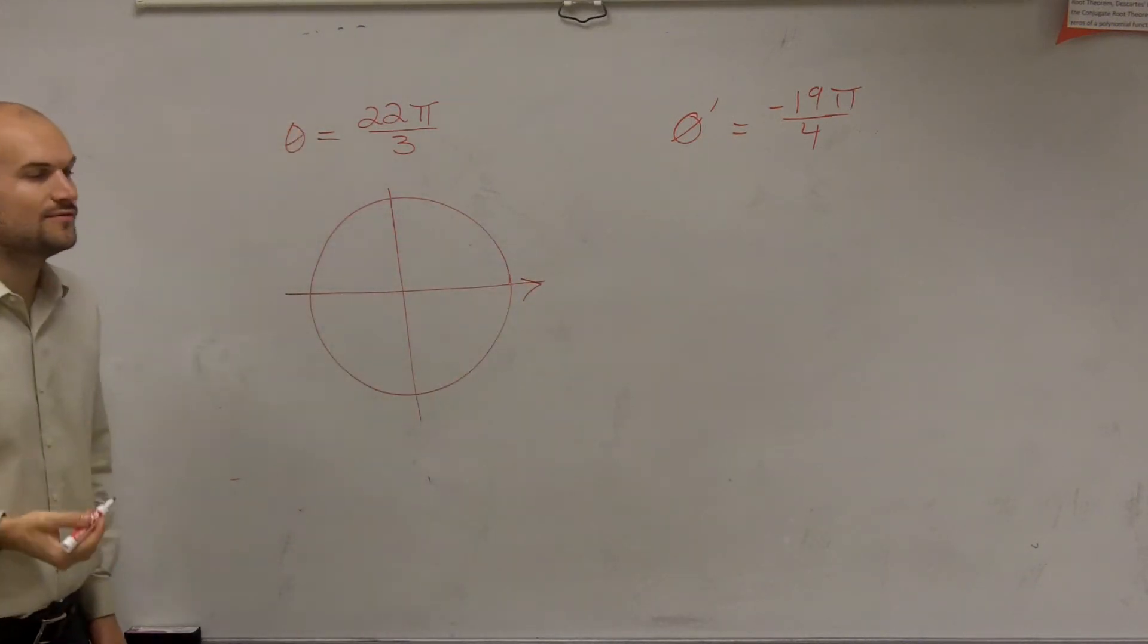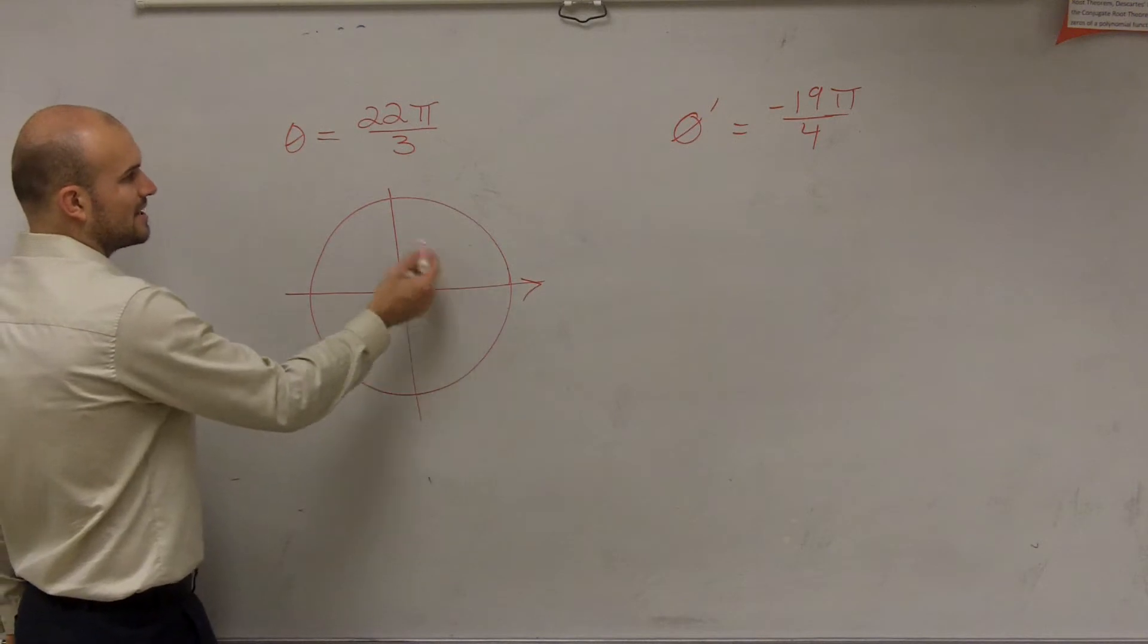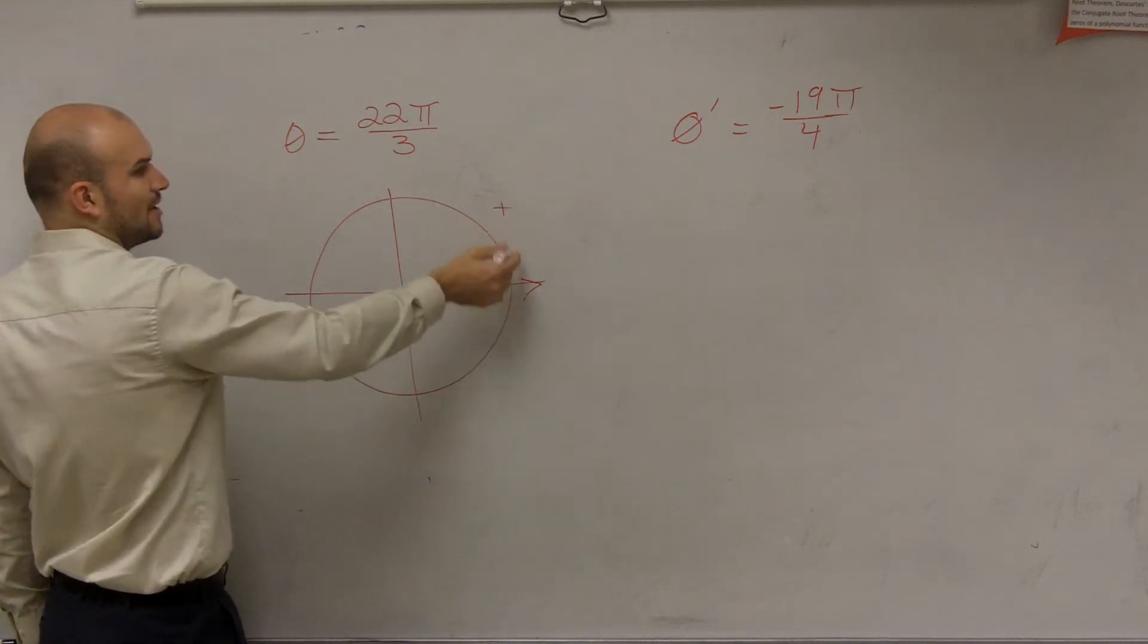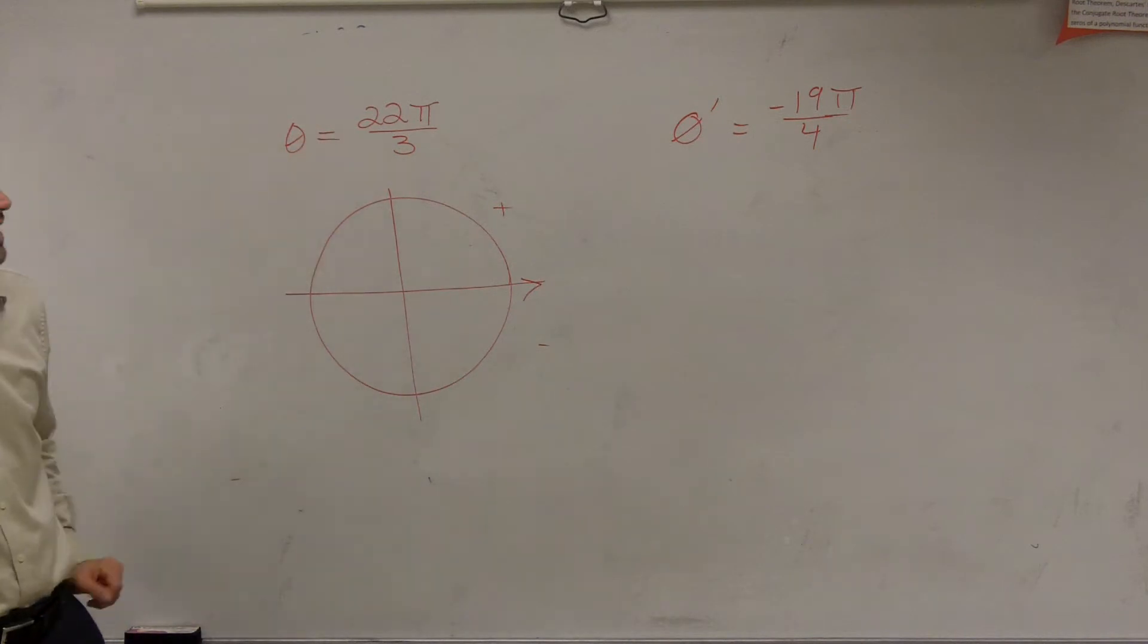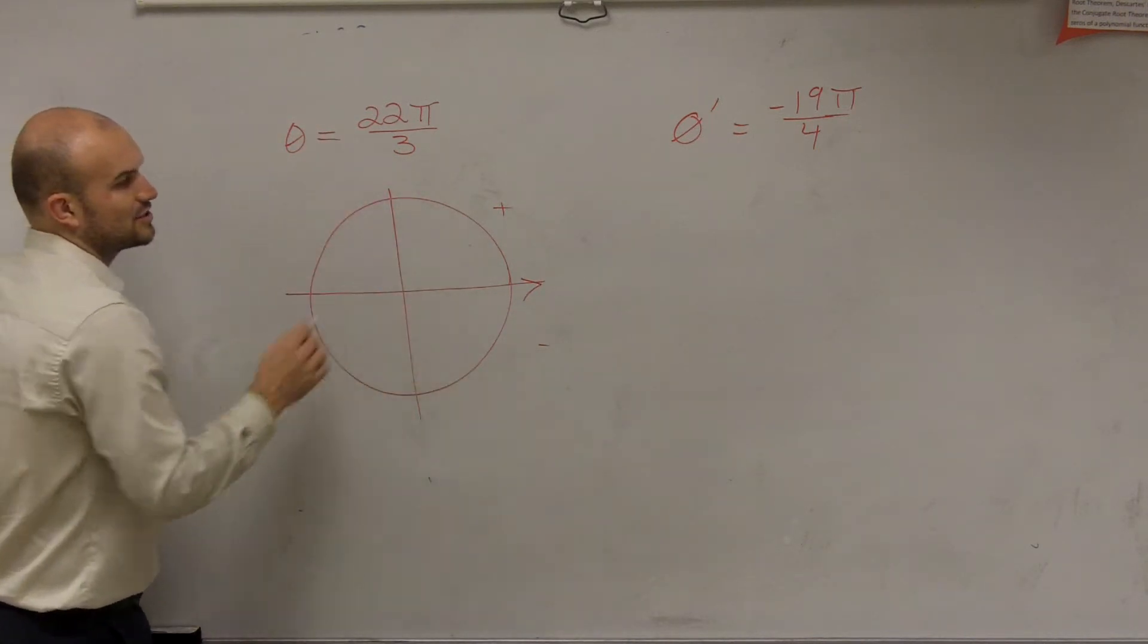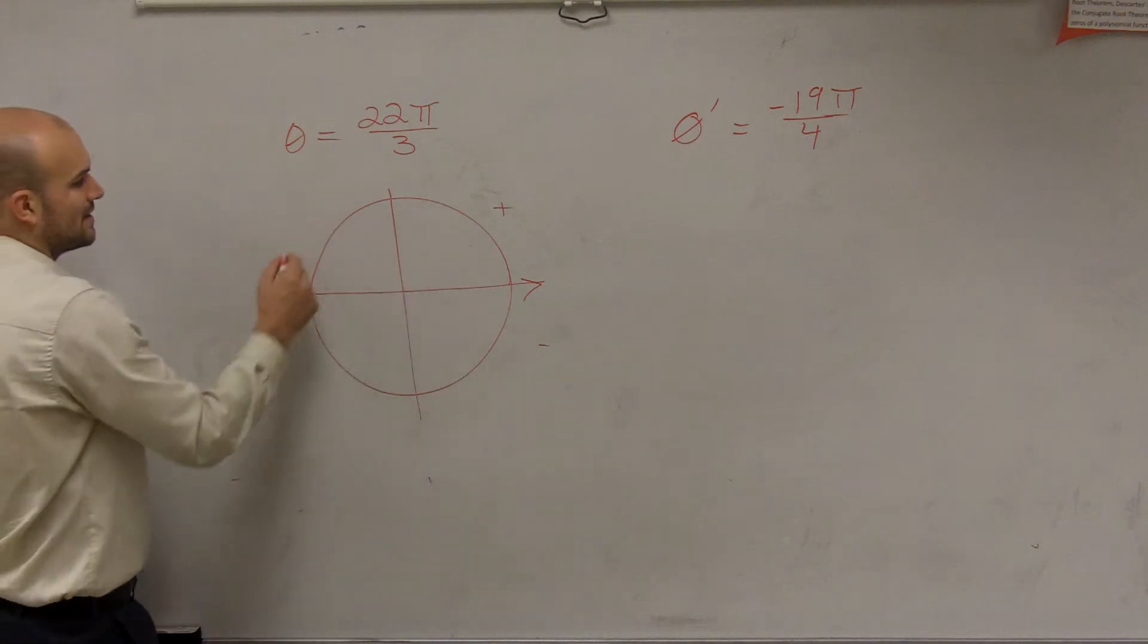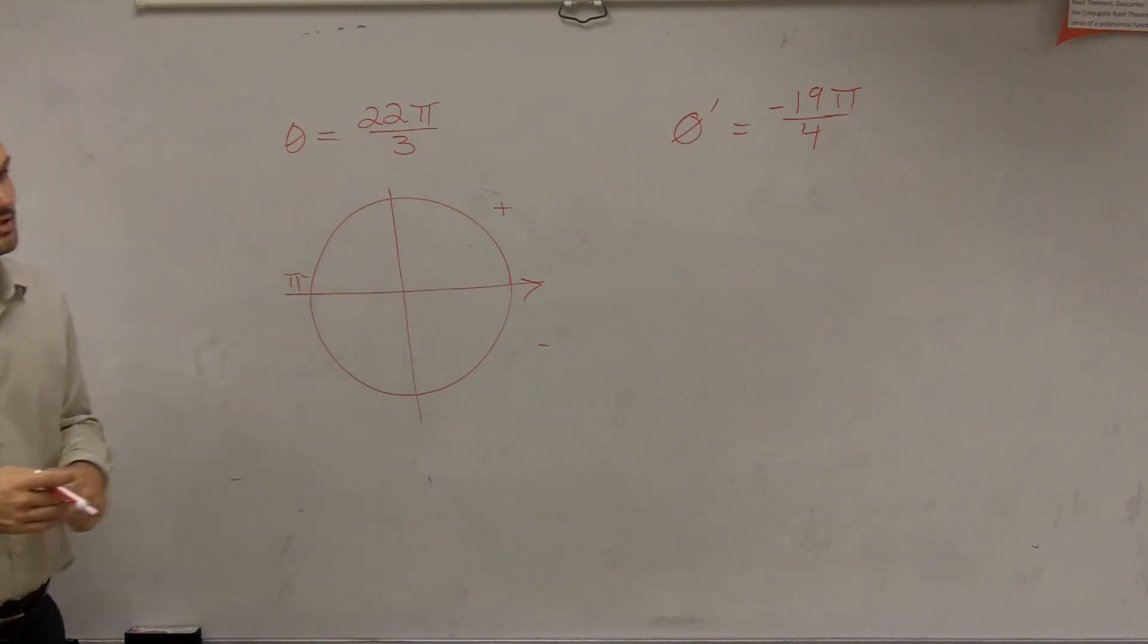And then what you do from there is we would just kind of rotate. The counterclockwise direction would be positive, and the clockwise direction would be negative. So this one's positive, so I'm going to be going in this direction. However, we remember that halfway around a circle is π, but we're talking about 22 over 3 π.